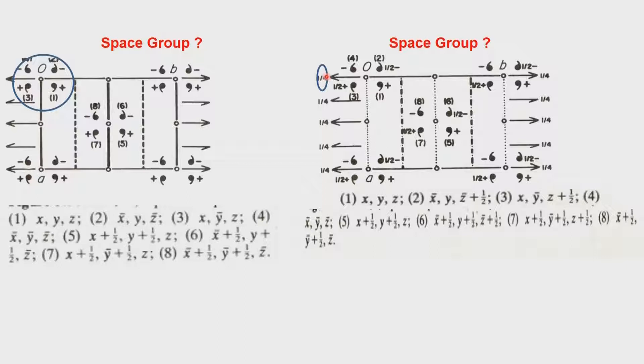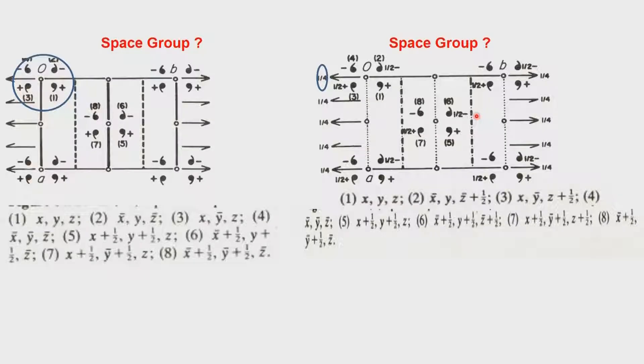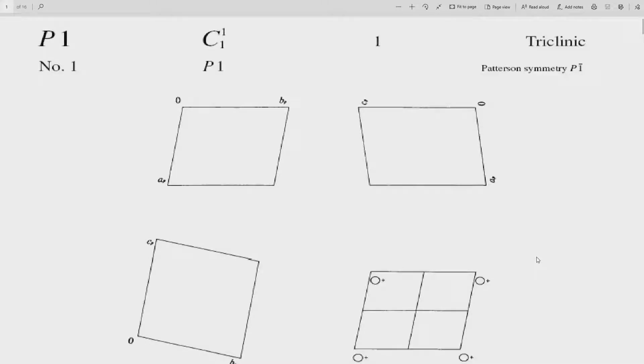So there must be a C-glide plane associated with this. The C-glide coincides with the origin, and the twofold symmetry moves by one-fourth. This generates therefore the space group C2/c. As you see, by just looking at the presence of the equivalent points and the locations and nature of the symmetry elements, you can determine the space group. Once you have determined the space group, you can write the equivalent points. We now cross over to the international tables entry.